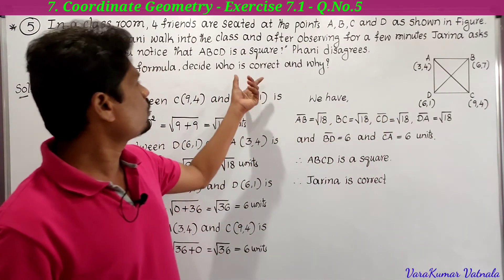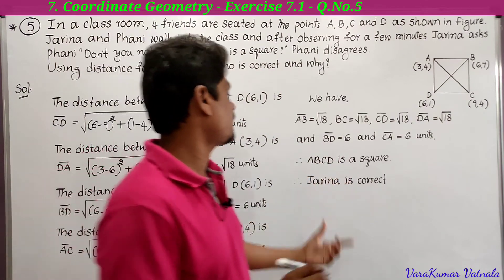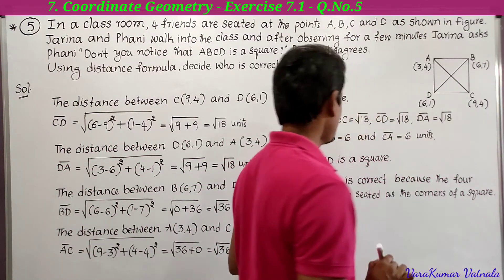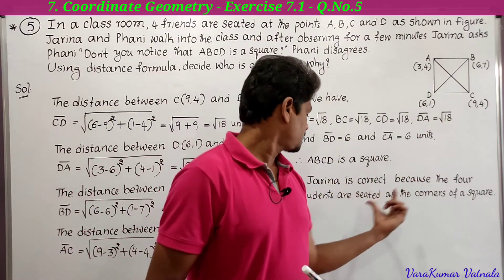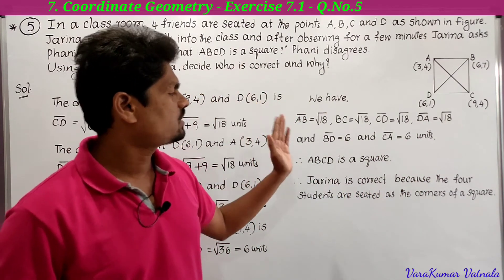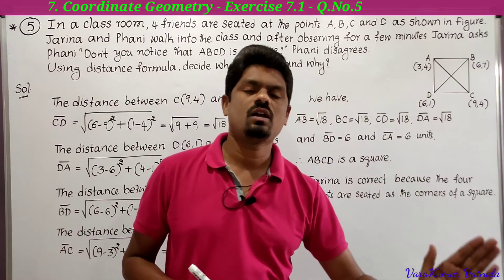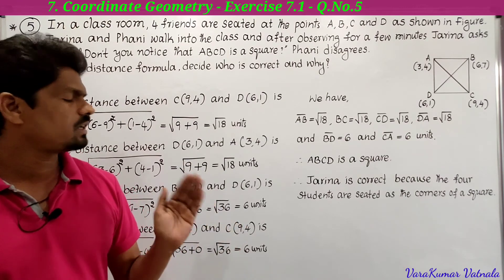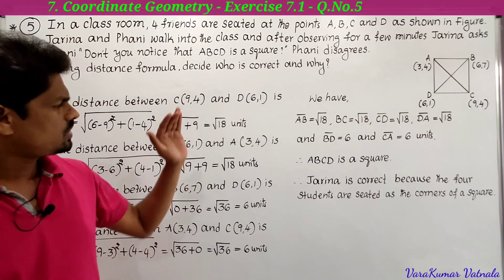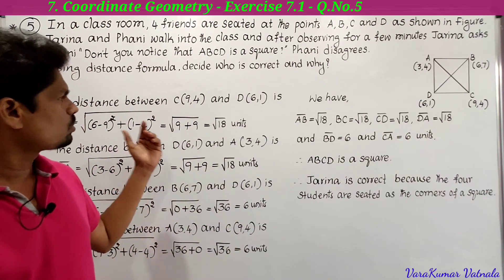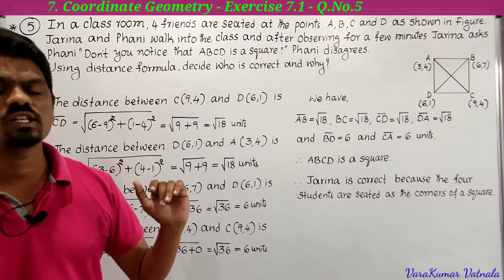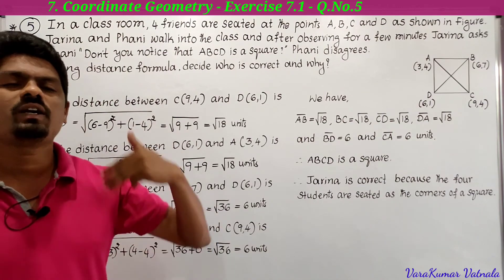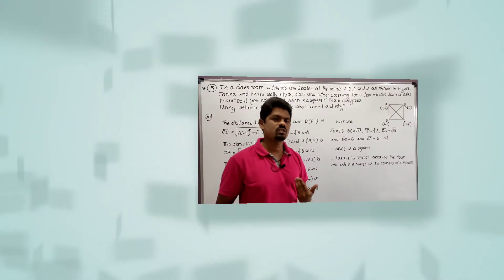Jarina is correct because the four students are seated at the corners of a square. This was the fifth problem — an application problem where we only needed to use the distance formula. That's all for today's class. We will meet in the next class with another problem. Thanks for watching.